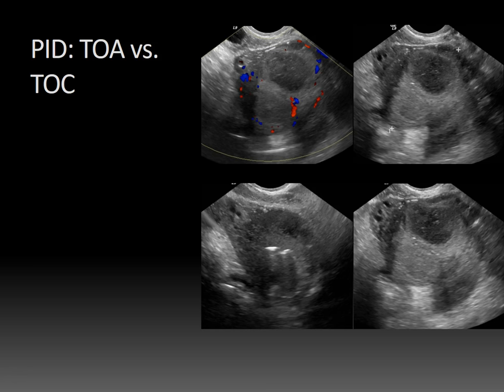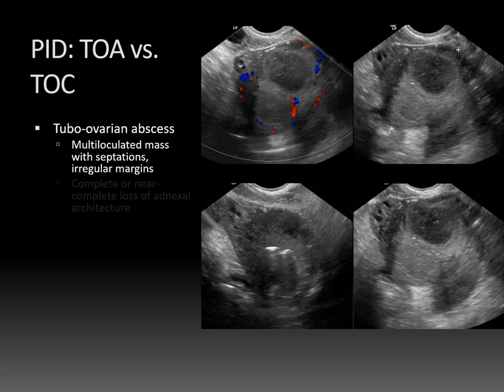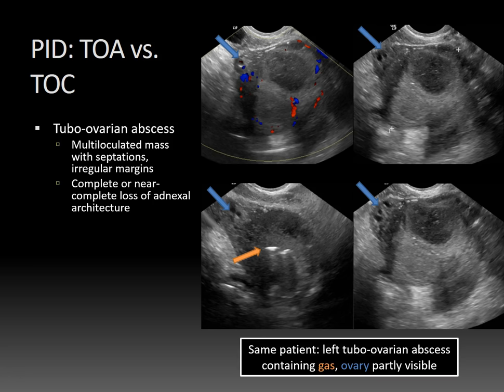Looking at that same patient on ultrasound, a tubovarian abscess will be a multi-loculated mass with septations and irregular margins. You'll have complete or near-complete loss of the adnexal architecture, meaning you normally won't see much normal ovarian tissue. In this case, you can see echogenic foci with dirty shadowing within the abscess indicating gas, and a bit of distorted, partially imaged normal ovary — this is a typical tubovarian abscess.